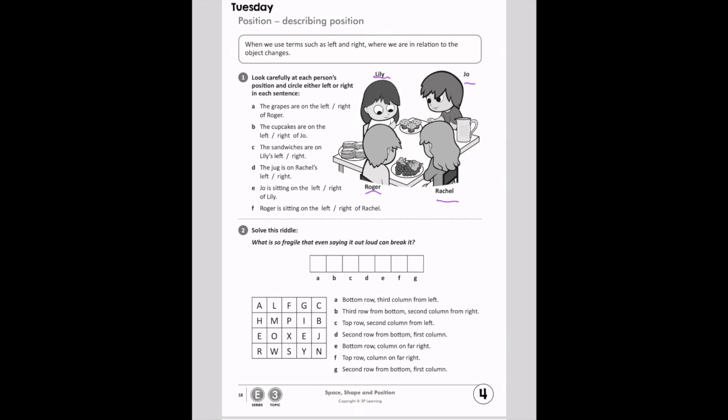So in A, the grapes are on the left or right side of Roger. We look at Roger. Here are the grapes. Think about being in Roger's position. Are the grapes on Roger's left, or are the grapes on Roger's right?